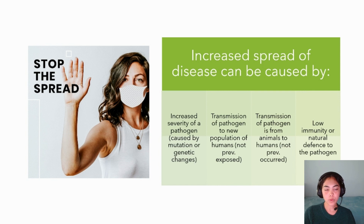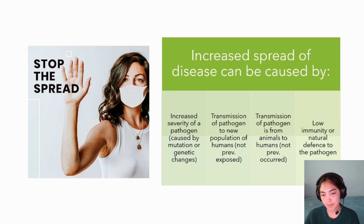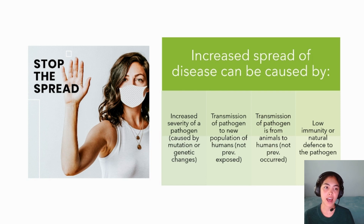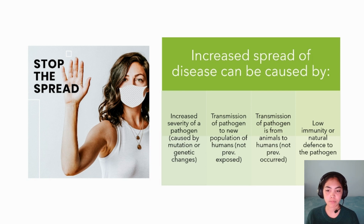When looking at the spread of disease, the chances of it spreading can be increased by the severity of the pathogen — meaning its virulence, or how easily it spreads from one person to another. This can occur due to a sudden genetic change within the pathogen's makeup that makes it more transmissible between different people.